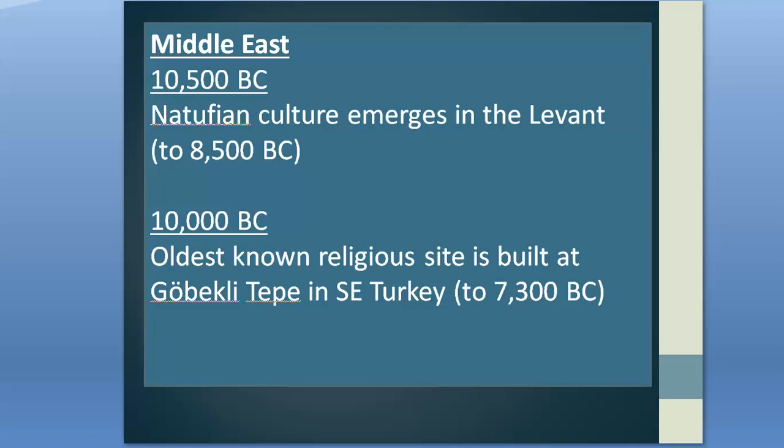The Natufians were semi-sedentary, living part of the year in semi-subterranean settlements with dry stone foundations, three to six meters in diameter, containing a central fireplace or hearth. The lifestyle of the Natufians changed as a result of drought conditions caused by the Younger Dryas, with wild cereals becoming fewer and fewer in the Levant. As semi-sedentary people, they could simply move to newer pastures, but there is some scarce evidence that a series of experiments were carried out.